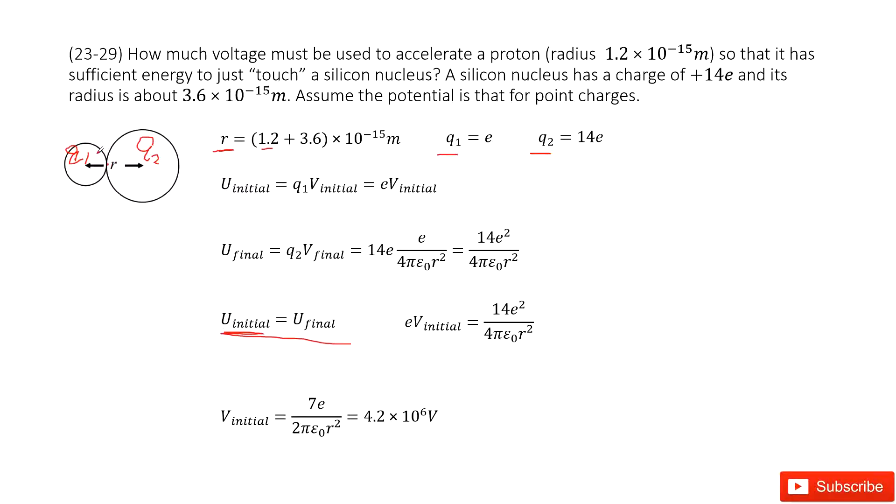Now we look at the initial potential energy. Initially there is just one particle, the proton. So this proton uses its charge times initial potentials, initial voltages. Initial electric potential is the initial energy. So U initial is Q1V initial, so we can write it there.